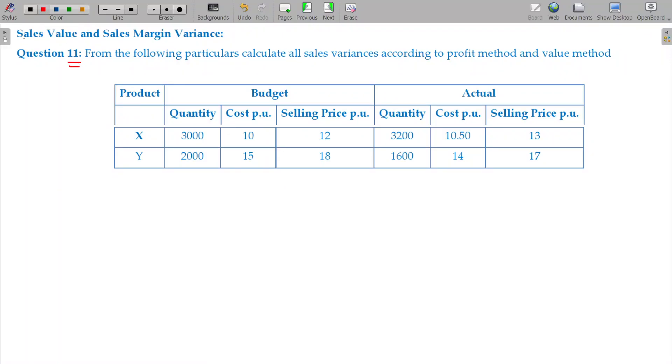Question number 11 is all about sales value variances and sales margin variances. You have to be strong with material variances. Most of the times you cannot expect illustrations from these two particular variances. Sales variances, sales margin otherwise profit variances are rare examples. There will not be more complications.